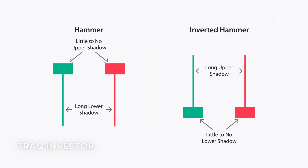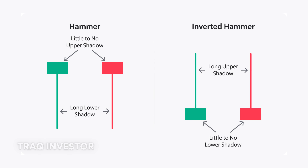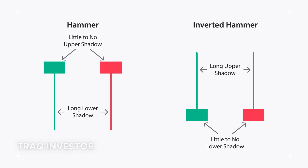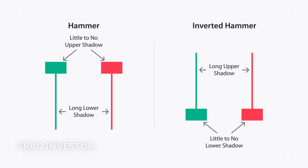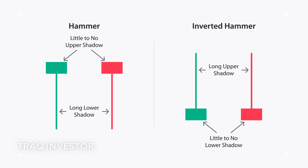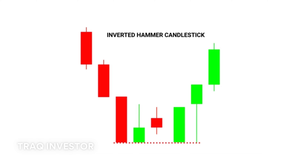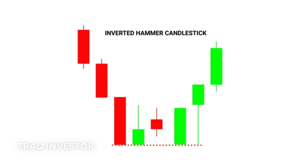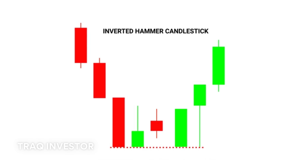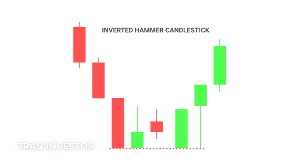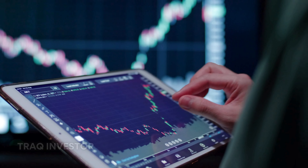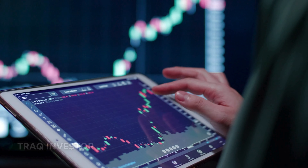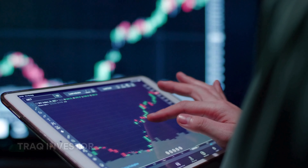Next, we have the inverted hammer, a similarly bullish pattern distinguished by its long upper wick and short lower wick. It signifies buying pressure followed by selling pressure that wasn't potent enough to drive the market price down. The inverted hammer suggests that buyers will soon take control of the market.